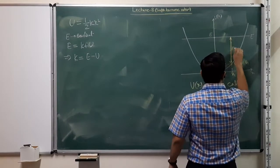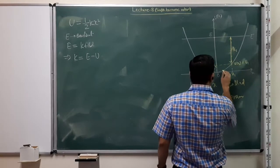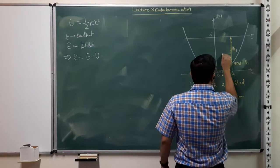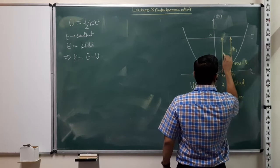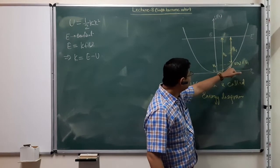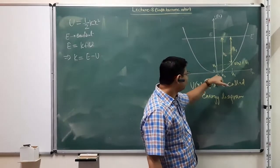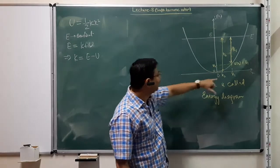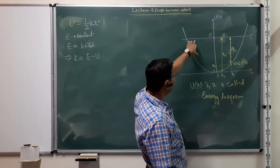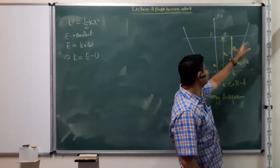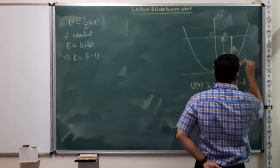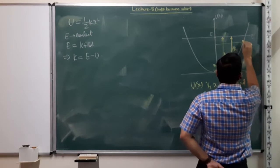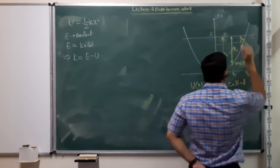So at a given location x1, the kinetic energy K1 is E minus U1. If I move to another point x2, the potential energy is U2 and the kinetic energy is K2. One can see that as the potential energy decreases, the kinetic energy increases. At its minimum, the potential energy will be minimum and the kinetic energy will be maximum. The sum of kinetic and potential energy always equals the total energy. As U increases, kinetic energy keeps decreasing. At point x3, kinetic energy is only K3.